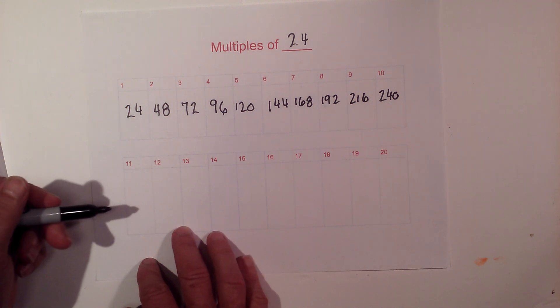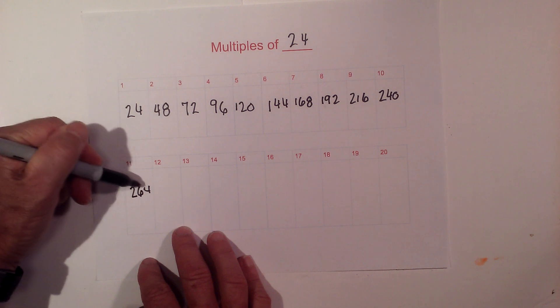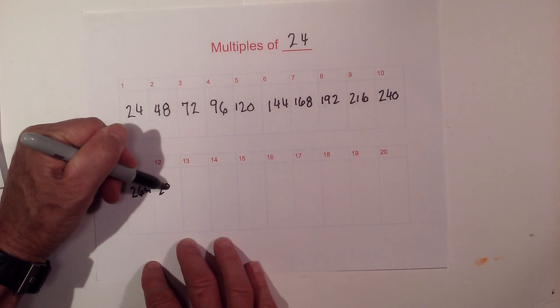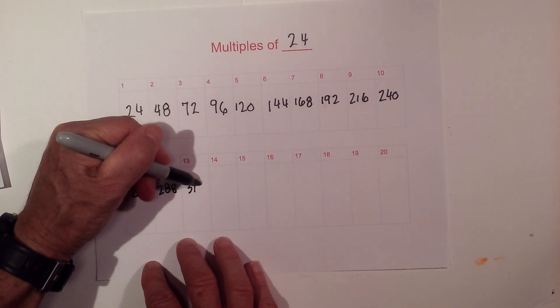Now let's go 24 times 11 is 264. That's a 4. Kind of messy. 288, then we have 312.